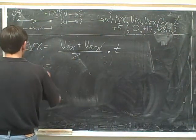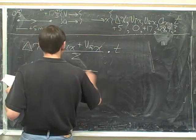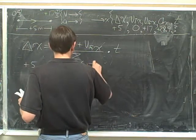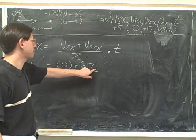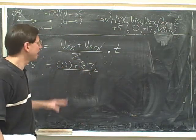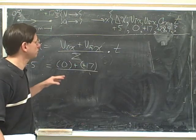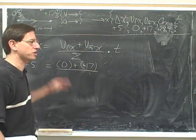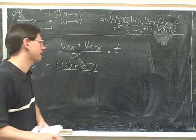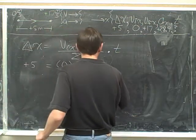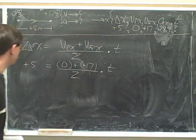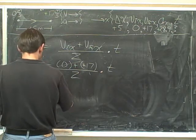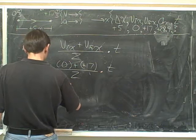So the displacement is positive 5. The initial x is 0. The final x is positive 17. I'm using parentheses to separate the sign of the number from the addition sign. I'm really encouraging you to use this exact notation — it's going to pay off big time as your physics course proceeds, because you're going to be very conscious of the signs and much less likely to make sign mistakes. The time we don't know, so we're not plugging in a variable for that. The 0 is now gone, so we have 17 divided by 2, times the time.